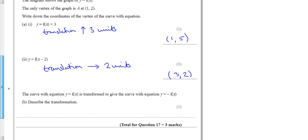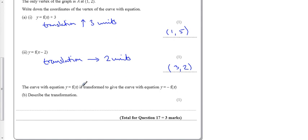And the last little bit. The curve with equation y equals f(x) is transformed to give the curve y equals minus f(x). So when it's outside the bracket, that means it's a flip or it's a reflection, because we have to be technical. In our heads it's a flip, but mathematically it's a reflection.